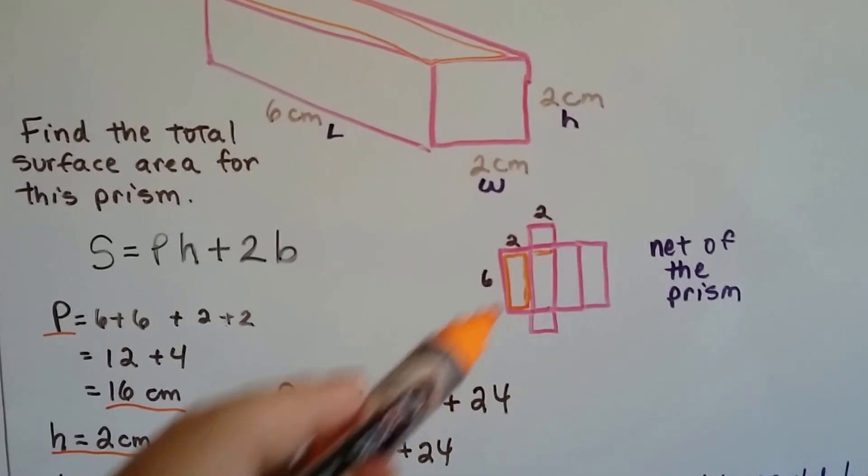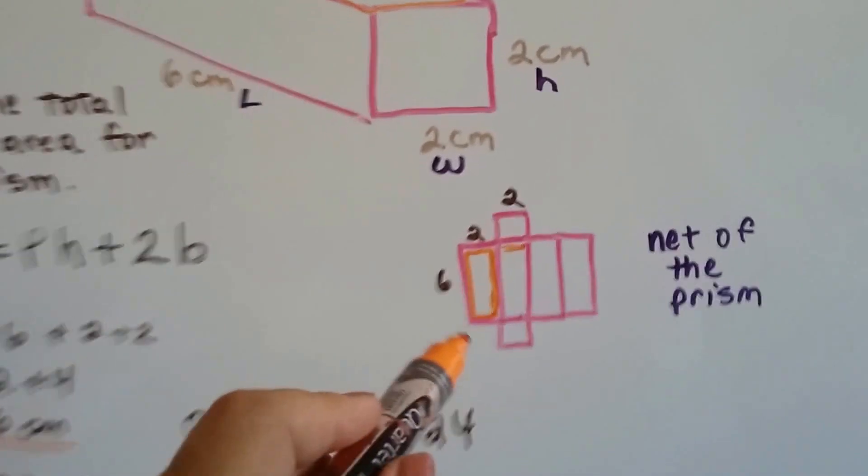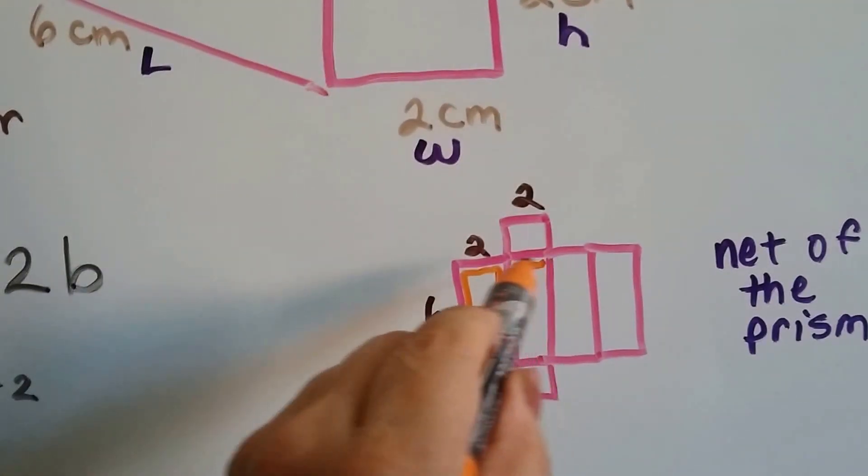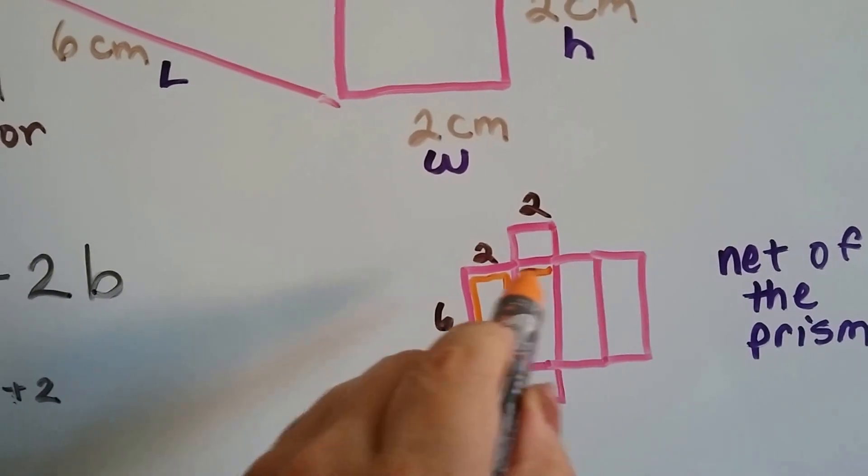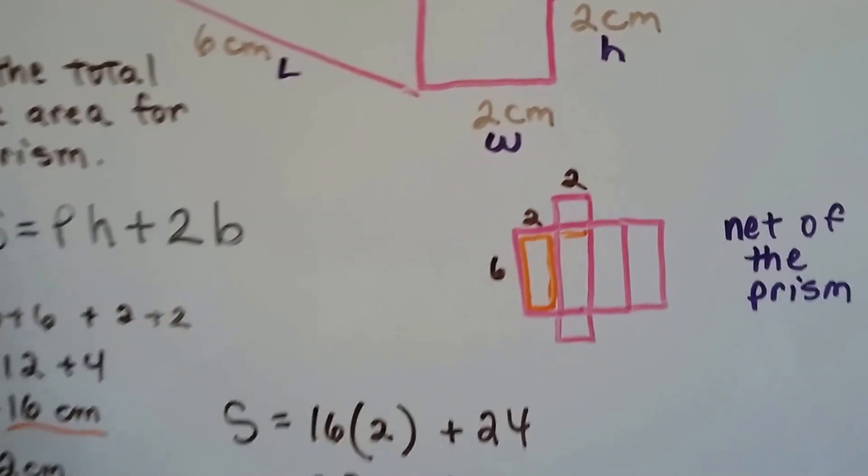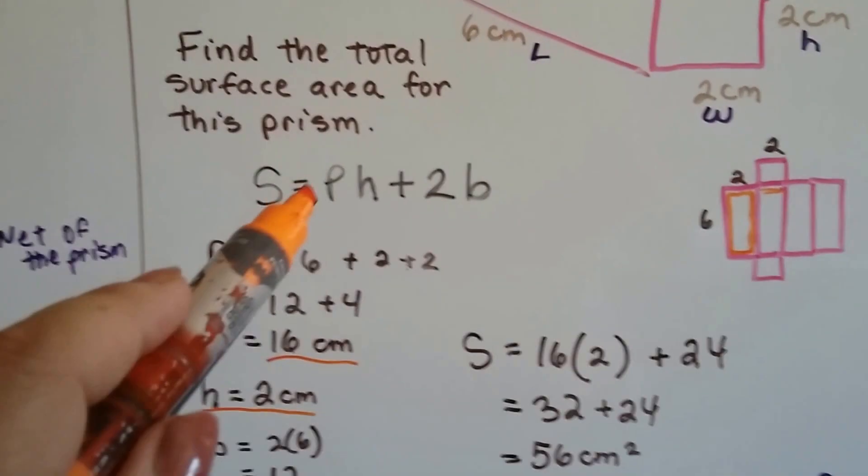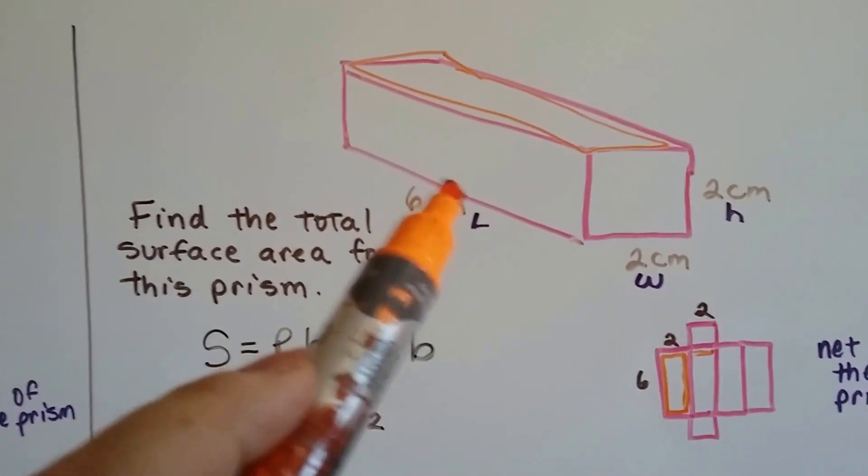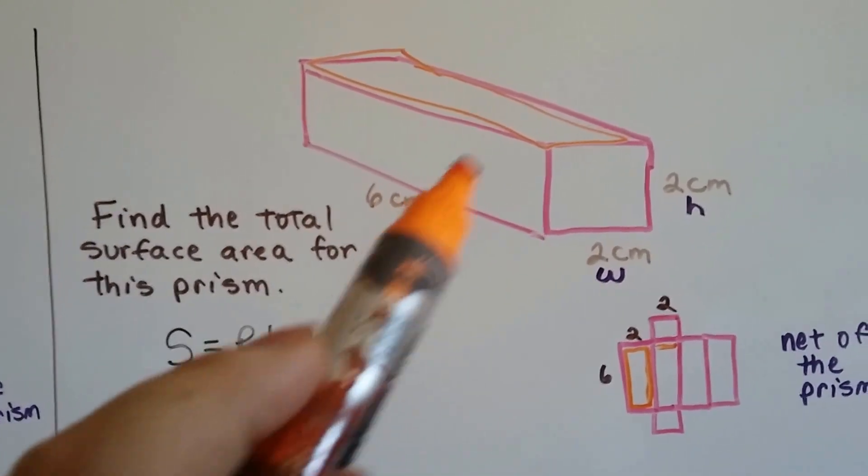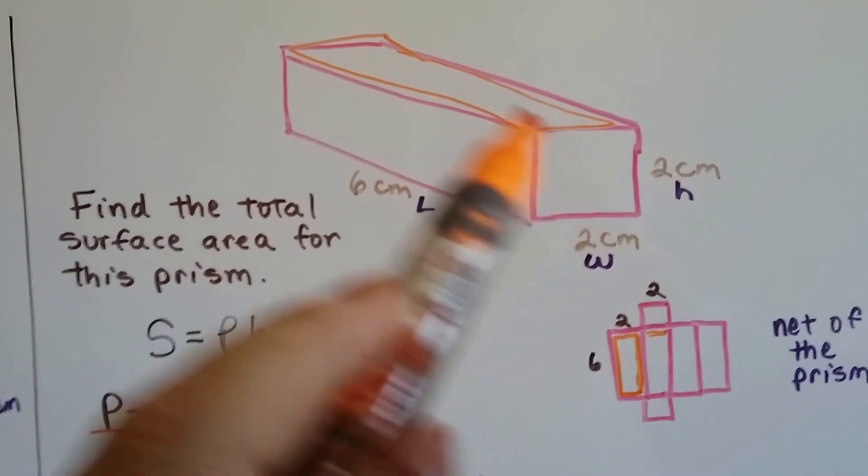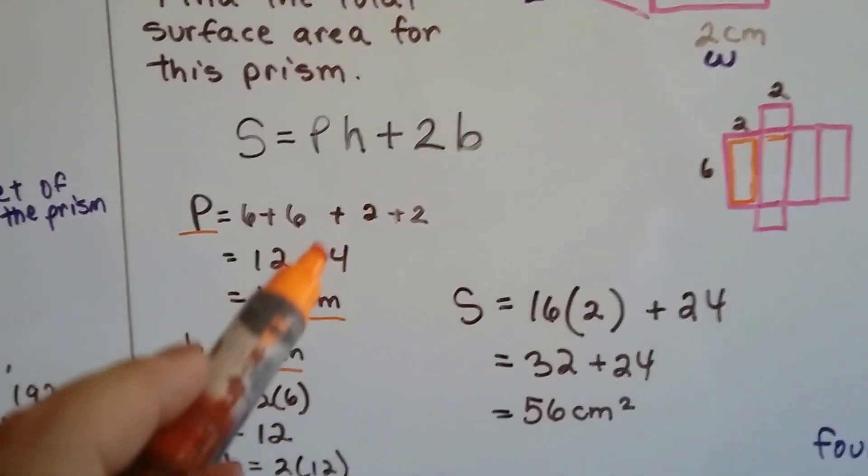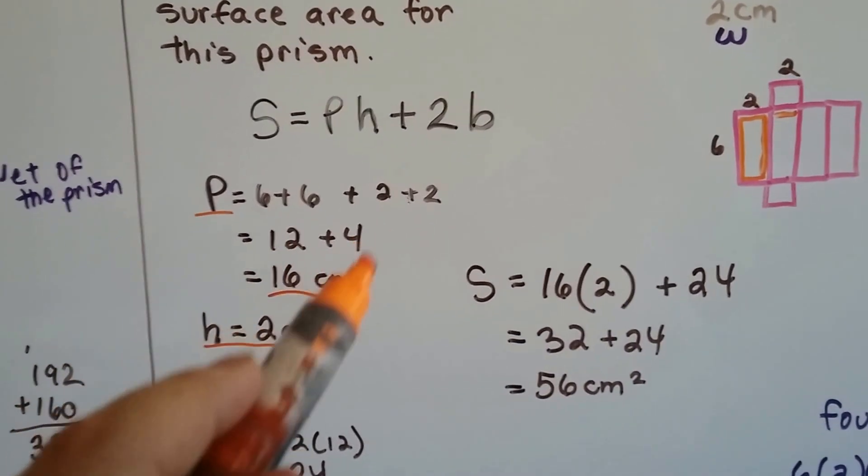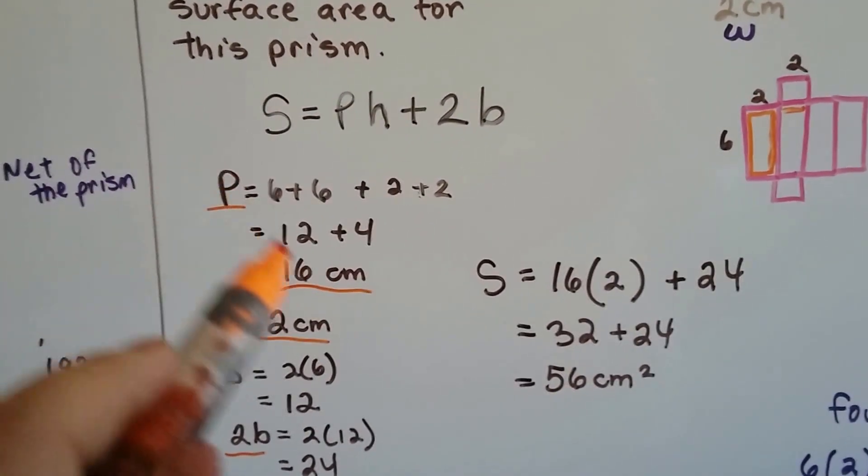Here's a net of what it looks like, and here's the perimeter, and you can see the height would be right here. The perimeter would be 6 and 6 and 2 and 2. 6 plus 6 is 12. 2 plus 2 is 4. 12 plus 4 is 16. So the perimeter is 16.